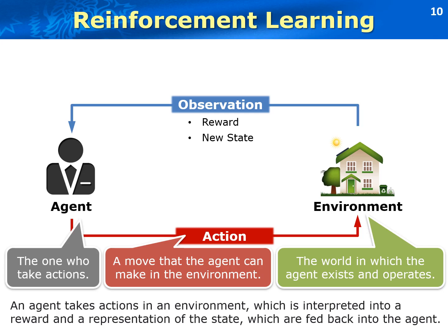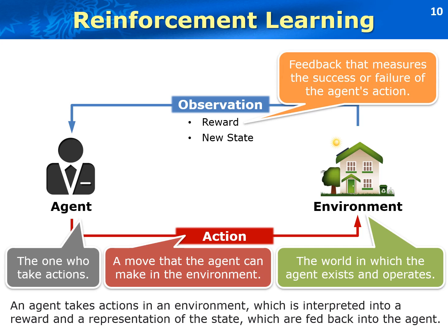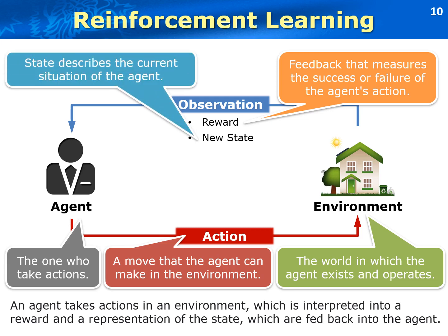After the agent's command, the dog will take an action, such as sitting or walking. The environment will send back observations to the agent. These observations include a reward and a new state of the agent. The reward is the feedback that measures the success or failure of the agent's action. For example, if the dog sits down, then I will give the dog a bone as a reward. The state describes the current situation of the agent, for example, the current position of the dog. After the reward and the new state are sent back to the agent, the agent will update its actions in response to the reward and the current state, in order to maximize the reward in future.